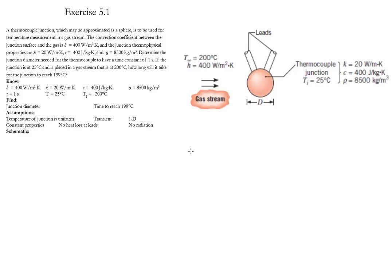Then we need to find out how long it takes for a junction which is initially at 25 degrees Celsius to reach a temperature of 199 if it's placed in a gas stream of 200 degrees Celsius. The information of convection and conduction coefficients are given as well as the heat capacity, the density, the temperature initial and the temperature of the gas.